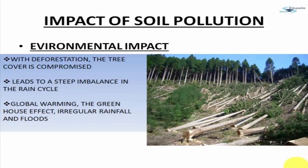The next impact is on the environment. With deforestation, trees are cut down and tree cover is compromised. Two things tend to happen: first, soil erosion takes place — the top layer of soil is washed away; and second, it imbalances the rain cycle because with no trees there won't be any more rain. This imbalance leads to global warming, the greenhouse effect, irregular rainfalls, and increase in floods.